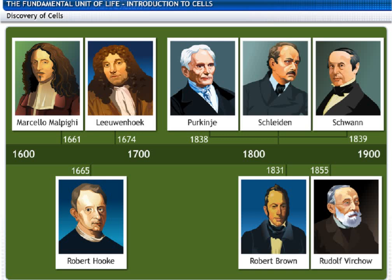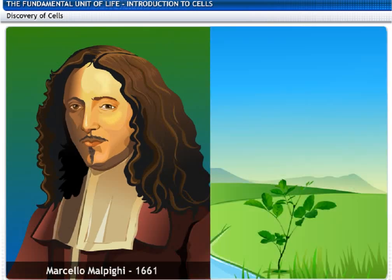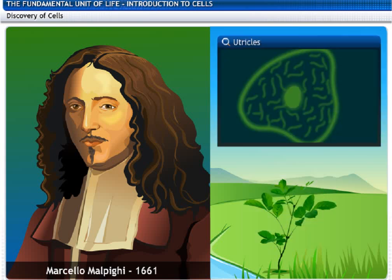The discovery of cells dates back to the 17th century and is associated with the invention of microscopes. Marcello Malpighi, a microscopist, proposed that plants are made of tiny structural units called utricles.